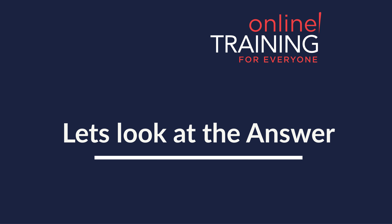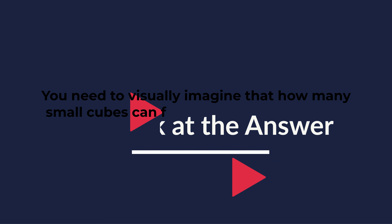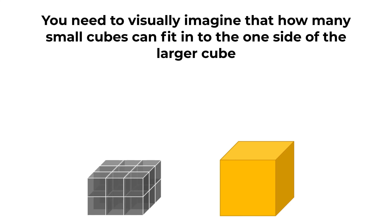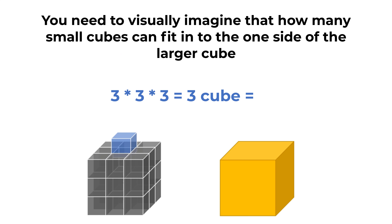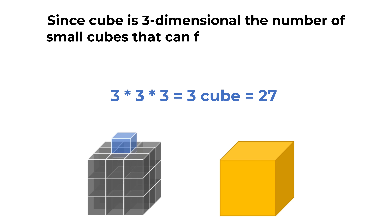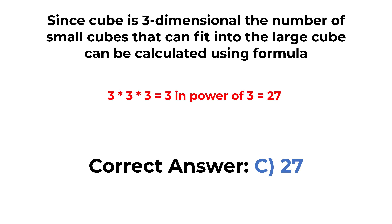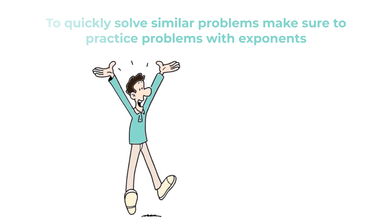To solve this challenge, you need to visually imagine how many small cubes can fit into one side of the larger cube. The answer is that 3 small cubes can fit on each side of the large cube. And since a cube is 3-dimensional, the number of small cubes that can fit into the large cube is calculated as 3 multiplied by 3 multiplied by 3, which equals 3 cubed, equals 27. So the correct choice here is Choice C, 27. Hopefully you've nailed this question and now know how to answer similar problems on the test.